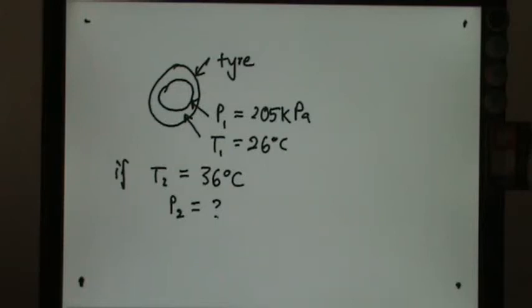This question shows a tire having pressure P1 equals 205 kilopascals and temperature T1 is 26 degrees Celsius. So 26 degrees Celsius can be changed to become 299 Kelvin.